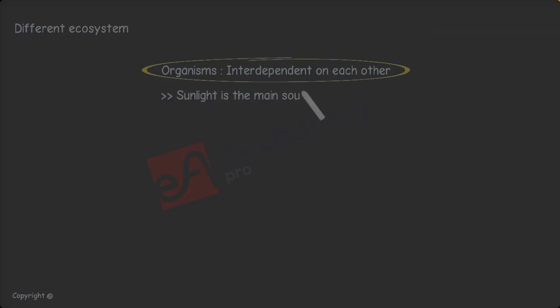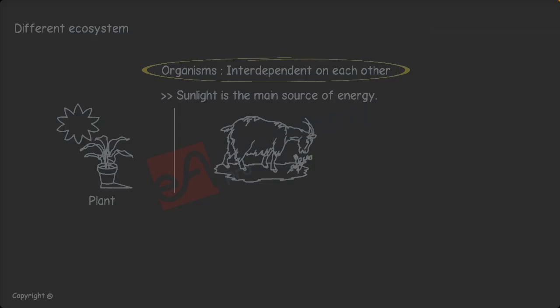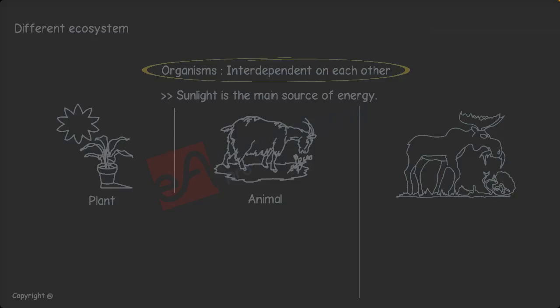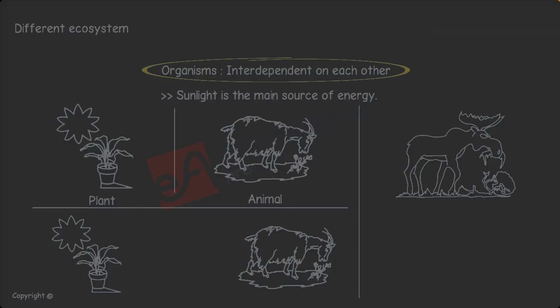Sunlight is the main source of energy. So plants get their energy from sunlight. But what about animals? How do they get their energy? Animals get energy when they eat plants. The energy from plants is then transferred to animals. So plants get energy from the sun and animals get energy by eating plants.